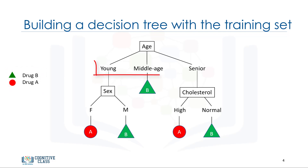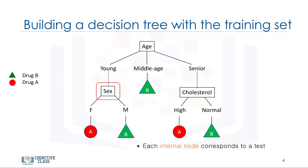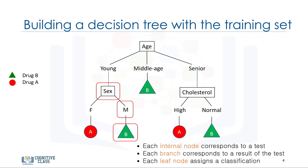We start with age, which can be young, middle-aged, or senior. If the patient is middle-aged, then we'll definitely go for drug B. On the other hand, if the patient is young or senior, we'll need more details to help us determine which drug to prescribe. The additional decision variables can be things such as cholesterol levels, gender, or blood pressure. For example, if the patient is female, then we will recommend drug A, but if the patient is male, then we'll go for drug B. As you can see, decision trees are about testing an attribute and branching the cases based on the result of the test. Each internal node corresponds to a test, each branch corresponds to a result of the test, and each leaf node assigns a patient to a class.